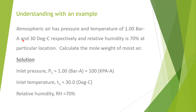Understanding with an example: atmospheric air has a pressure and temperature of 1 bar absolute and 30 degrees Celsius respectively, and relative humidity is 70% at a particular location. Calculate the molecular weight of moisture. Inlet pressure P1 is 1 bar, which is 100 kPa absolute. Inlet temperature is 30 degrees Celsius.